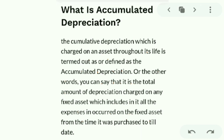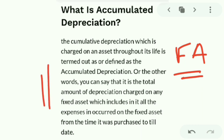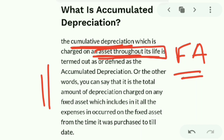Accumulated depreciation is a depreciation that is charged on the asset — particularly fixed assets — throughout the years from when it is purchased. Cumulative depreciation means the total depreciation that is charged for the particular year as well as all previous years, covering its whole life.